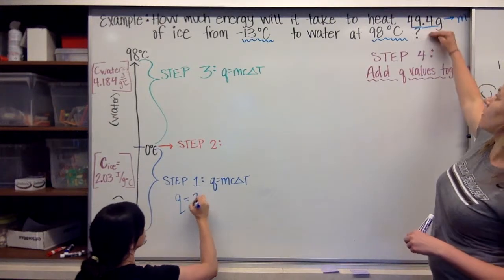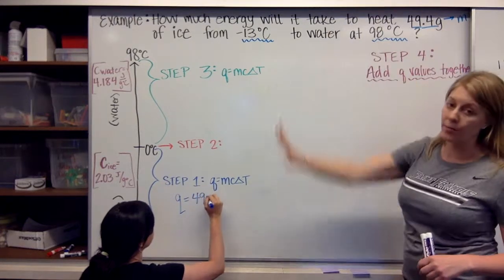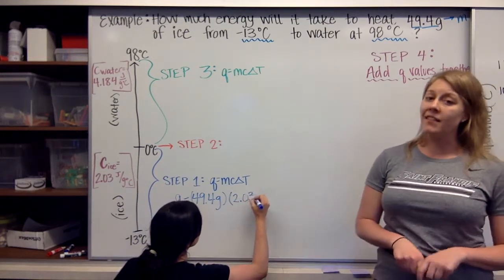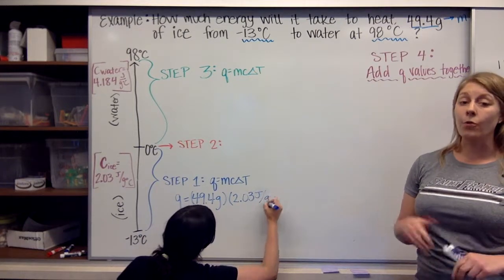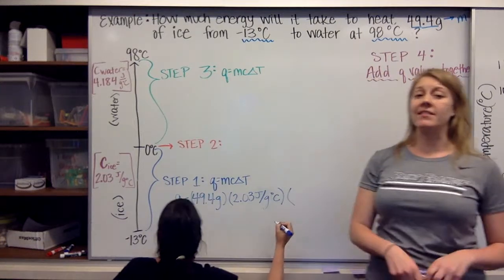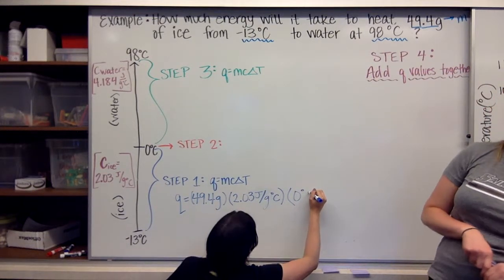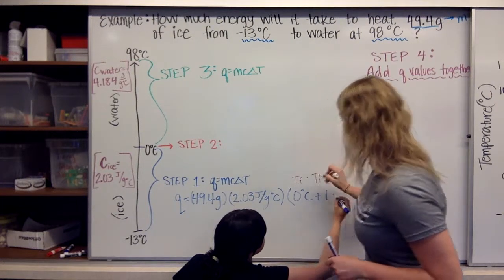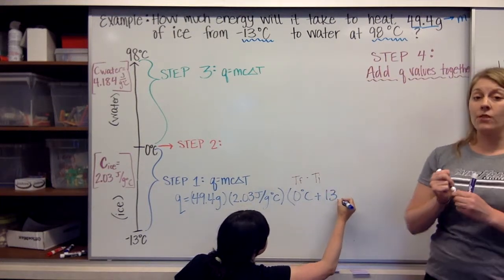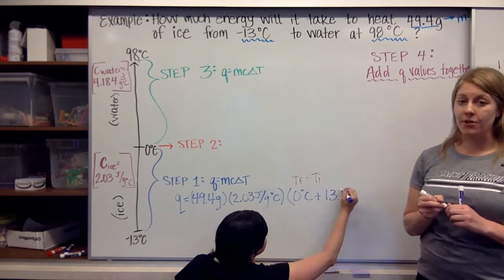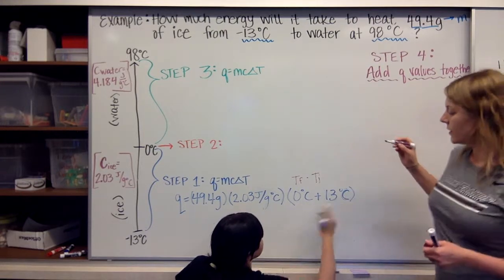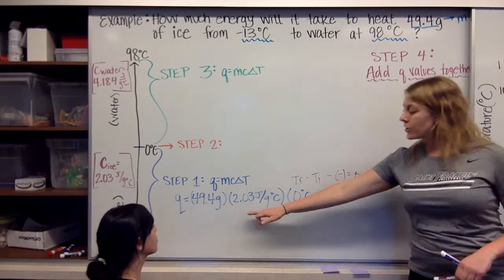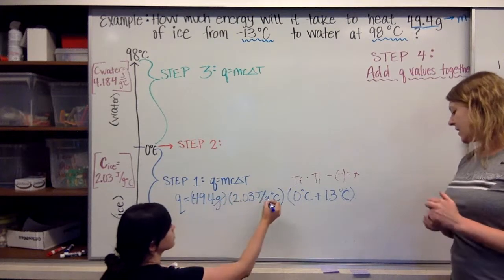Q equals M — our mass is 49.4 grams, which will be the same mass for this entire problem — multiplied by the specific heat of ice. This is not the same as the specific heat of water, which is 4.184 J/g·°C. We multiply by the change in temperature: final minus initial, which is zero minus negative 13, giving us positive 13 degrees Celsius.